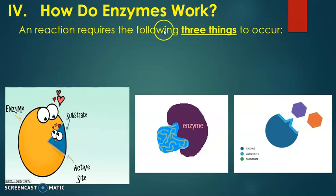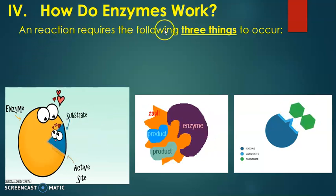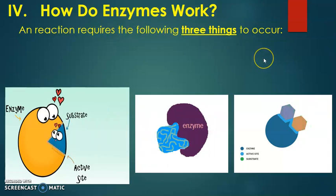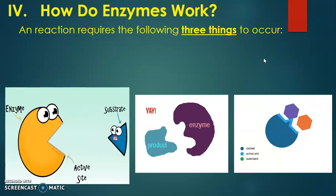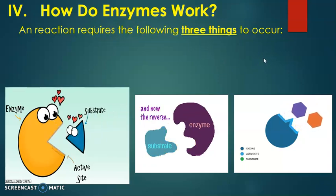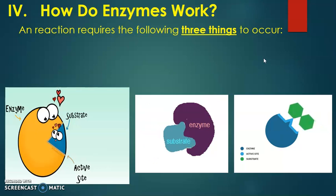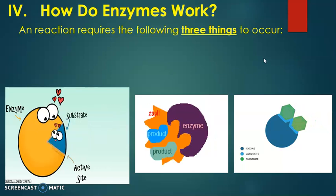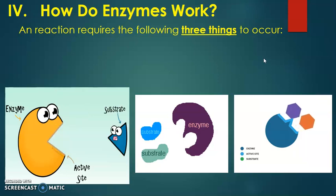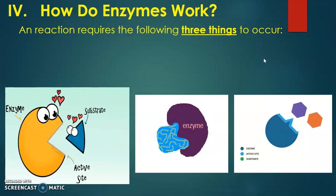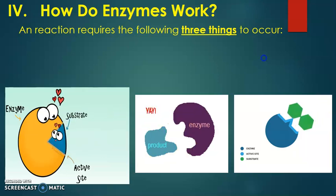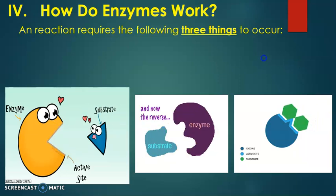So how an enzyme works. A reaction is going to require the following three things. Any reaction in your body, either dehydration synthesis or hydrolysis reactions, are actually being performed by enzymes. So if you want a reaction to occur, you're going to need these three things.